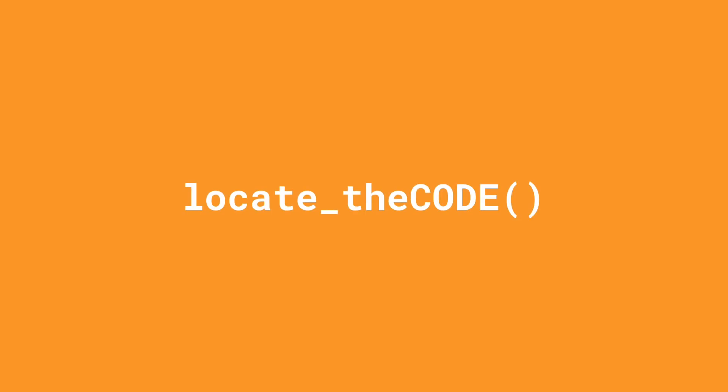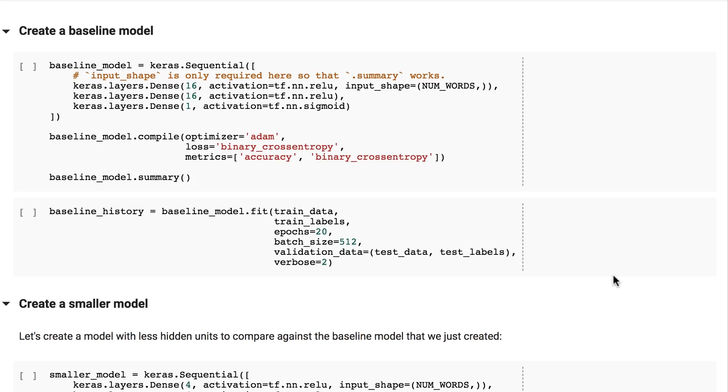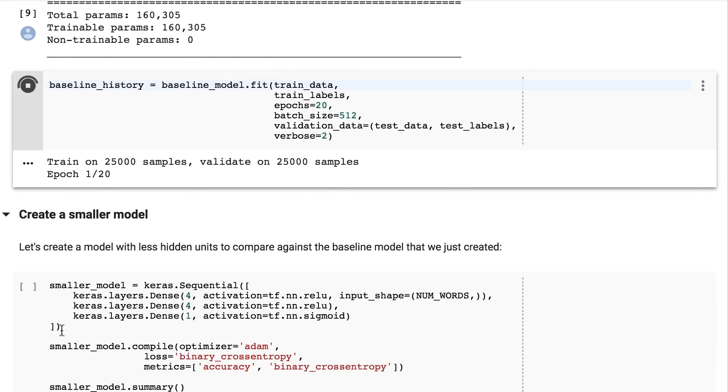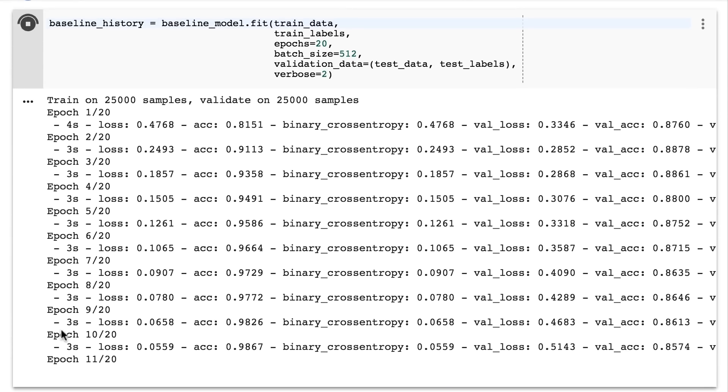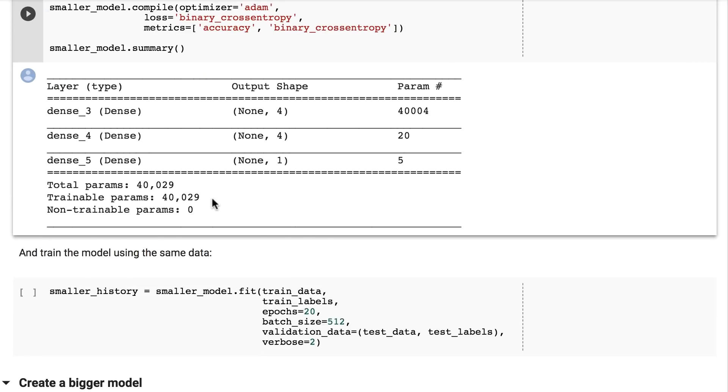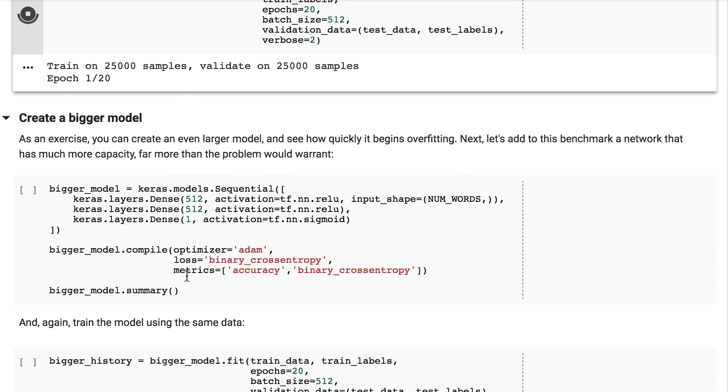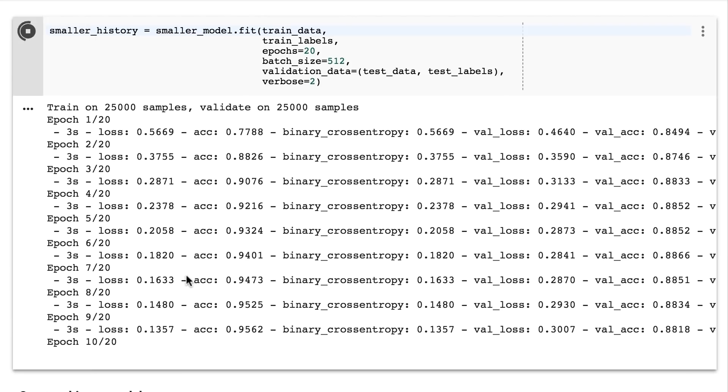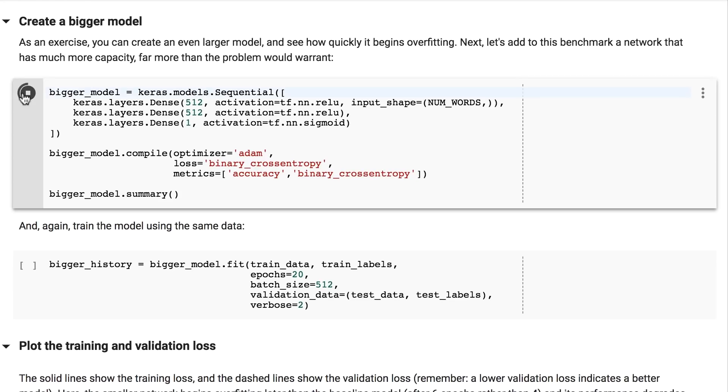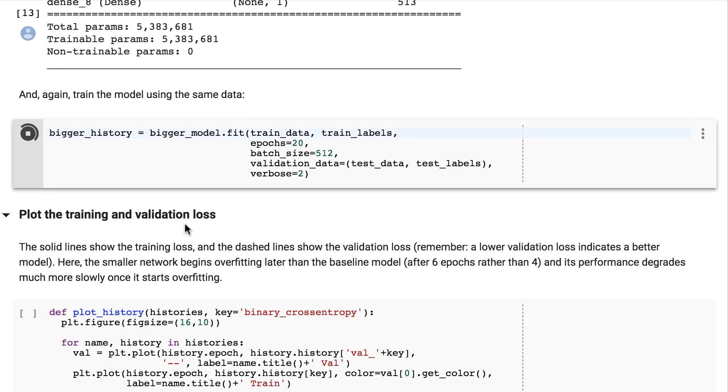OK, time to bring out the code. You can locate it here. Now let's train and test these models. First we define the baseline model. Then we train it. And here we define the small model, and train it. And finally, we define the bigger model, and train it.